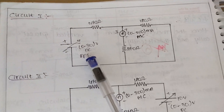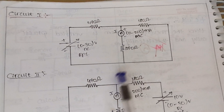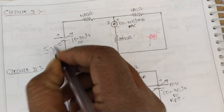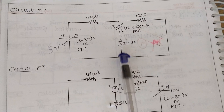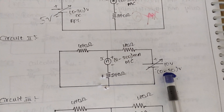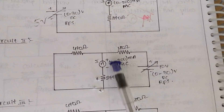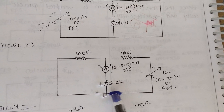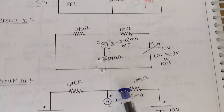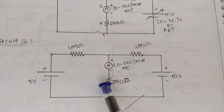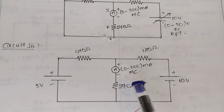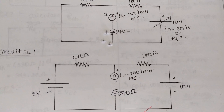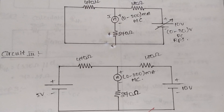In the first step, when the 5 volt source is activated, we find the current through the 270 ohm resistance. In the second step, when the 10 volt source is activated, we find the current through the 270 ohm resistance. Finally, when both sources are acting together, we calculate the current through the 270 ohm resistance to verify the superposition theorem.